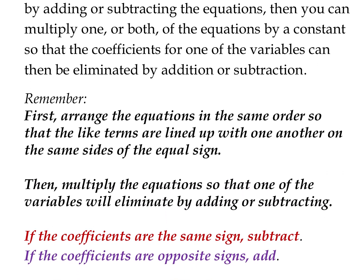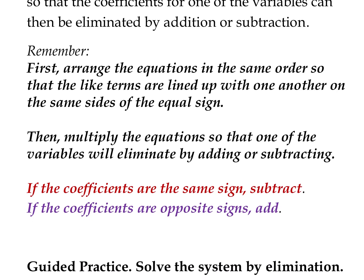A couple things to remember when we're doing elimination: we want to arrange the equations so that the like terms are on the same side of the equal sign in the same order — x's and y's lined up, and the constant terms lined up — so we're combining like terms when we add or subtract. If we multiply the equations so one variable will eliminate, and the coefficients are the same sign, remember to subtract. If they're opposite signs, add. We'll talk about a way to multiply so it's addition each time, because that's generally easier to follow.